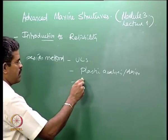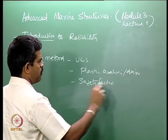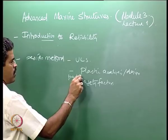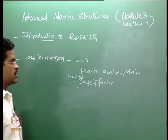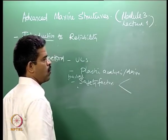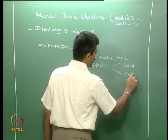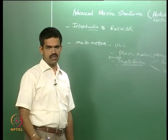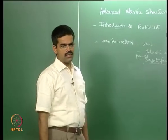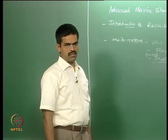We also discussed safety factors, which we put as partial safety factors, because they do not account for all kinds of uncertainties. Safety factors are associated with two things: one is associated with the load, and the other is associated with the strength of the material. Essentially, safety factors account for various uncertainties involved in estimating the loads or estimating the strength of the material.